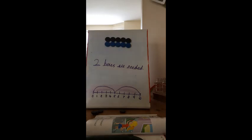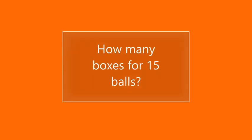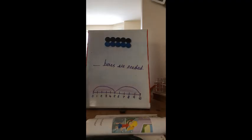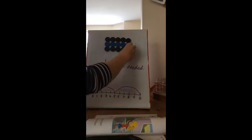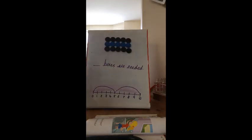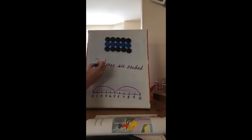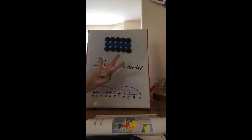For 15, I need to add five more balls: 1 2 3 4 5. How many groups of five do I have now? I have one, two, three — so three boxes must be needed. Let's try counting on our five times table until we get to 15: 5, 10, 15. How many boxes? One, two, three — three is your answer.